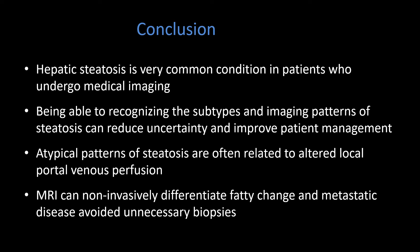In conclusion, steatosis is common and we're going to see it routinely in medical imaging. Recognizing those subtypes and imaging patterns will reduce uncertainty, improve patient management, and help avoid unnecessary additional workup. Atypical patterns of steatosis are often related to local abnormalities in portal venous perfusion — whether third inflow in characteristic locations like the falciform ligament, gallbladder fossa, or anterior right portal vein — or altered perfusion due to segmental portal venous thrombus or local mass effect from a neoplasm, producing wedge-shaped or atypical patterns. MRI is the best modality for differentiating fatty sparing or steatosis from metastatic disease and can help avoid unnecessary interventions.